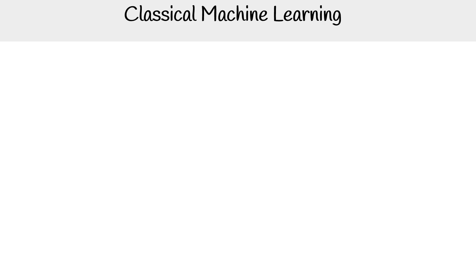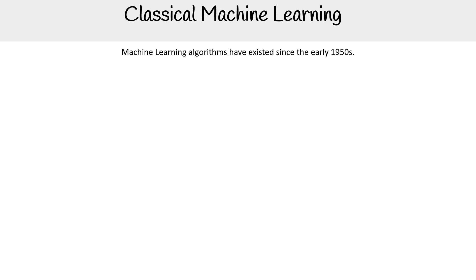Let's take a look at classical machine learning. When we say classical, we're talking about algorithms that have existed for quite a while — maybe as early as the 1950s — because we had mathematicians who figured these out. A lot of these things actually relate to statistics, and we're taking statistics and utilizing them in these algorithms in our computing spaces.